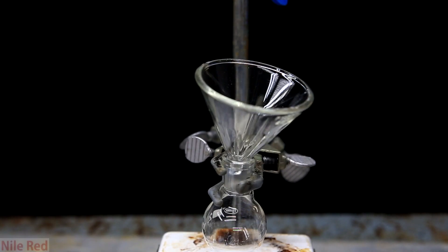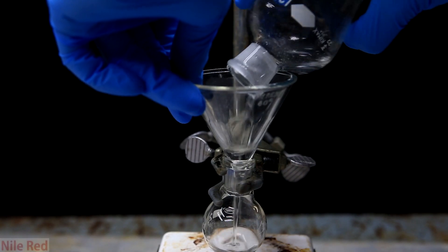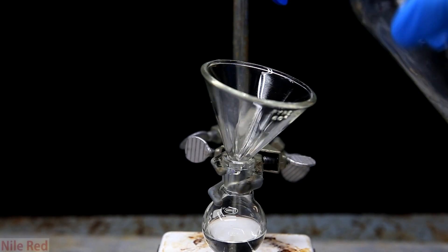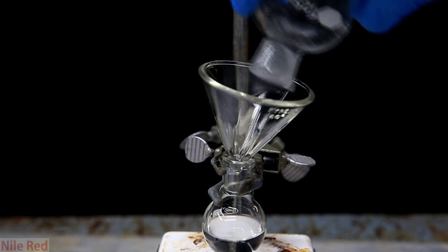The now relatively dry ether is poured out of the top of the separatory funnel into a clean round bottom flask. We don't drain it out the bottom because it would pick up some of the water that's left in the stem.